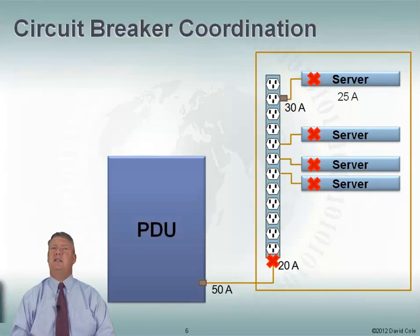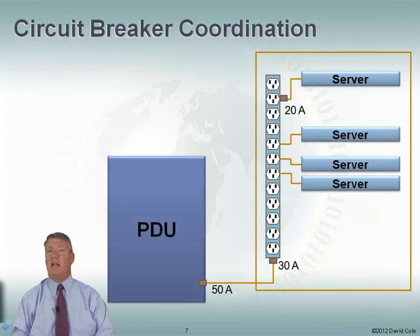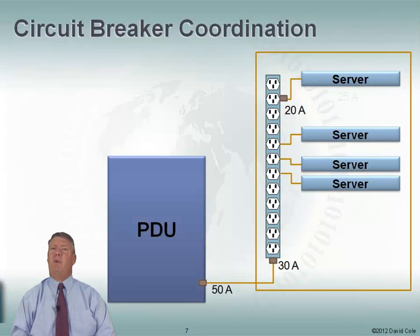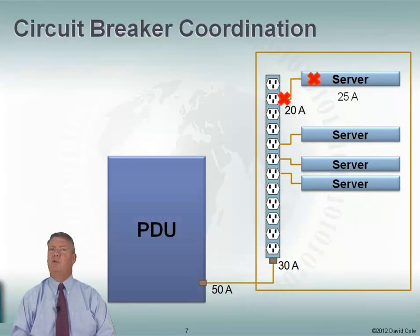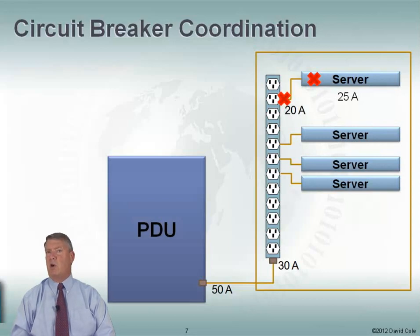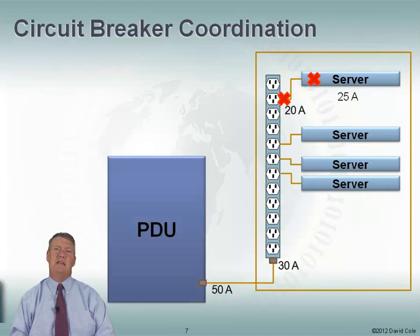This is bad circuit breaker coordination — this is not what we want. Instead, what if we switch these breakers around? If I had a 20-amp breaker at the outlet level and a 30-amp breaker at the rack power strip level, then when a server draws 25 amps, that's the breaker that pops. I lose that one server, but my other servers are blissfully unaware that anything happened. This is much better circuit breaker coordination — if I'm going to blow a circuit, I want it to blow as close to the equipment as possible and take down the least amount of equipment.